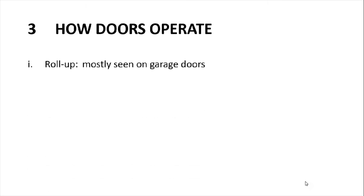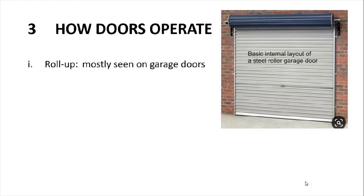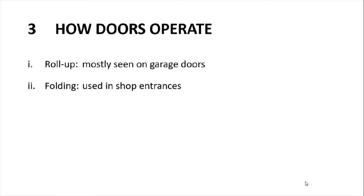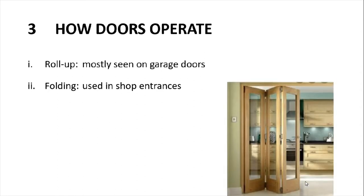The third objective — how do doors operate? First: roll up. There are some doors which roll up when they are opening, mostly seen on garage doors. There is an example of a garage door — it rolls up when opening. Second: some doors fold, so they have a folding action, used on shop entrances. They may be wooden or aluminium.